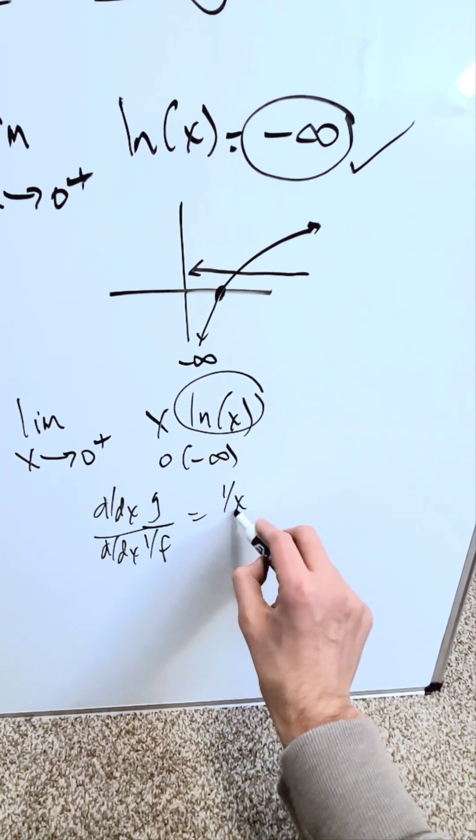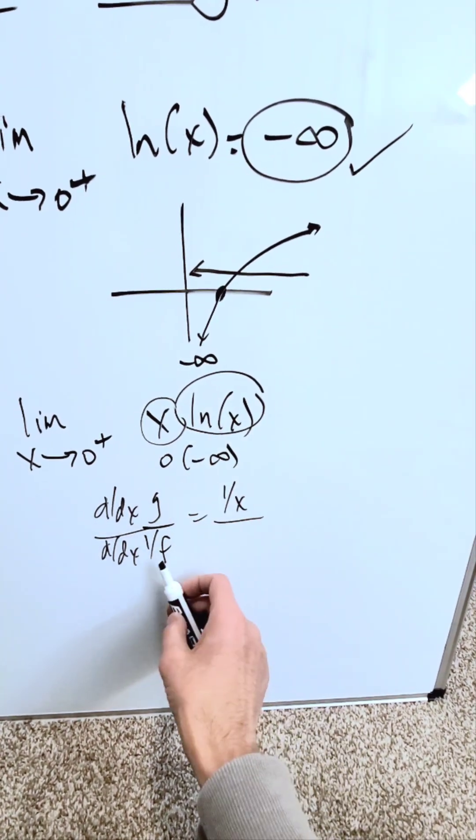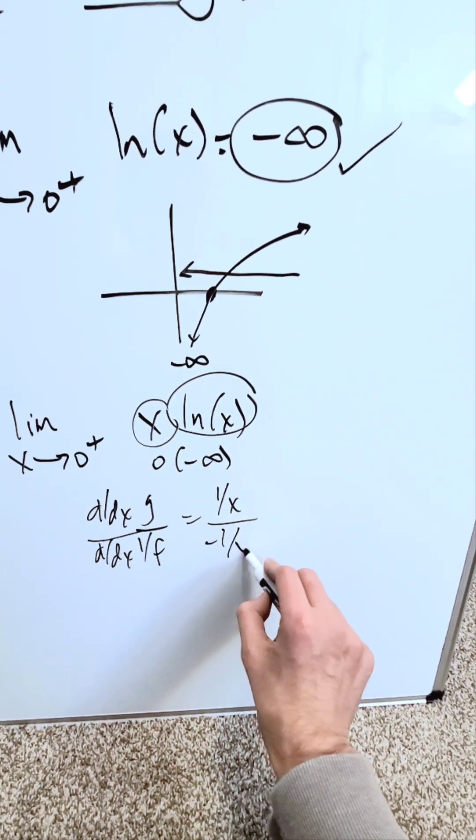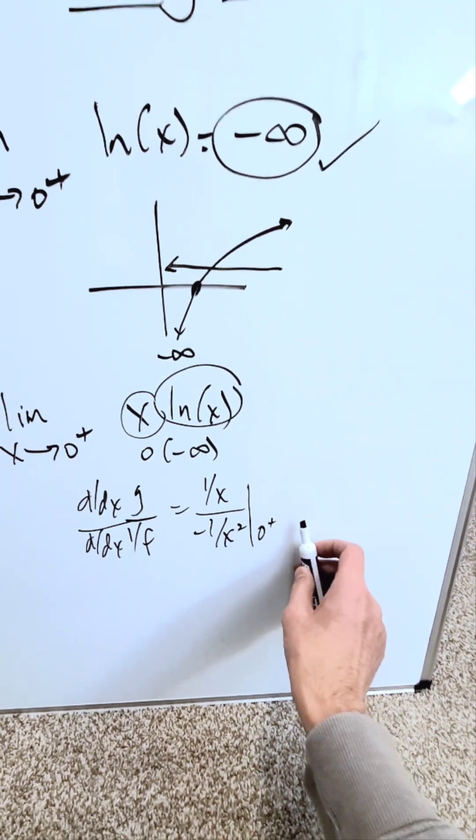If I make this my g function, the derivative of natural log x is always 1 over x. If I make this my f function, the derivative of 1 over x, the reciprocal is minus 1 over x squared, and then I would evaluate it at 0 or values to the right of 0.